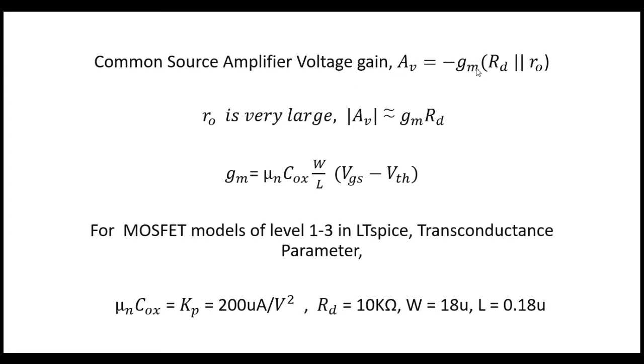The gain was minus gm times RD parallel ro, but we tried to increase the gain by increasing gm or RD. But it wasn't possible after some level because RD and gm have their own trade-offs. If we try to increase RD, what happened was the voltage swing at the output decreased.